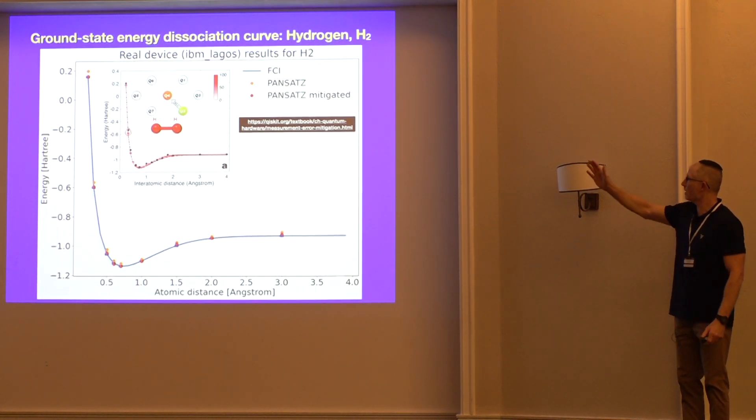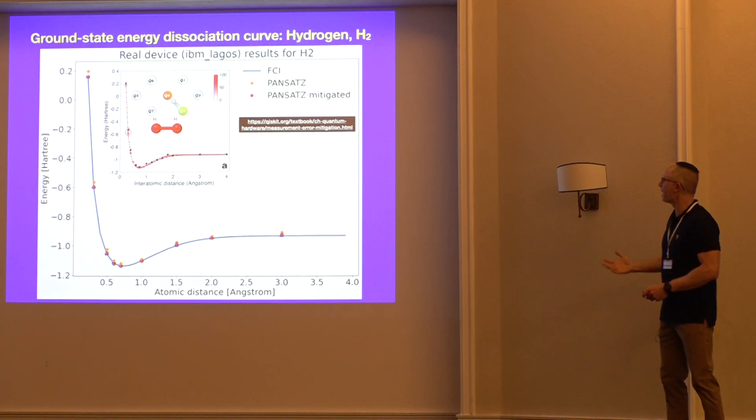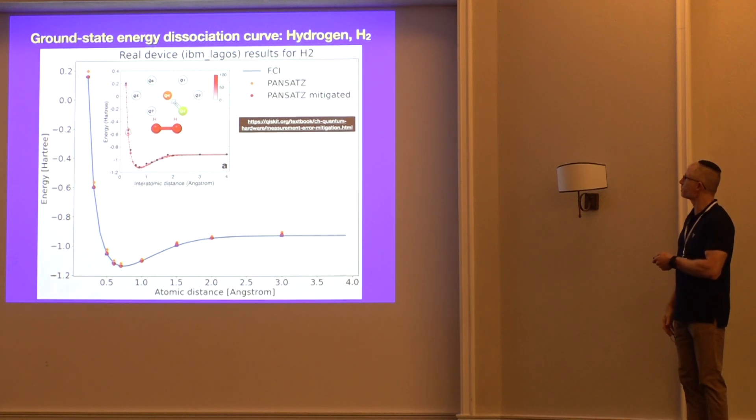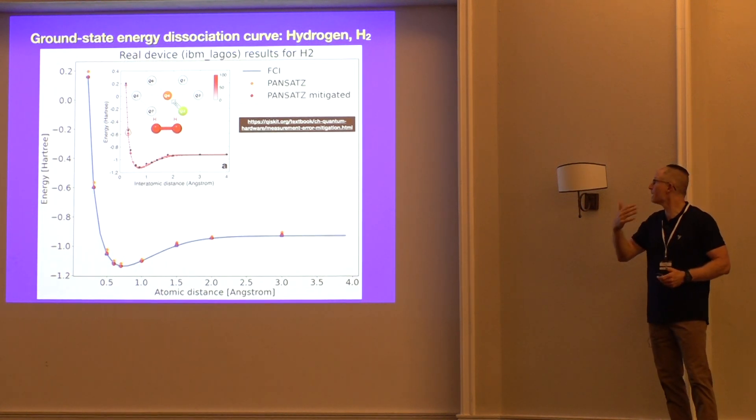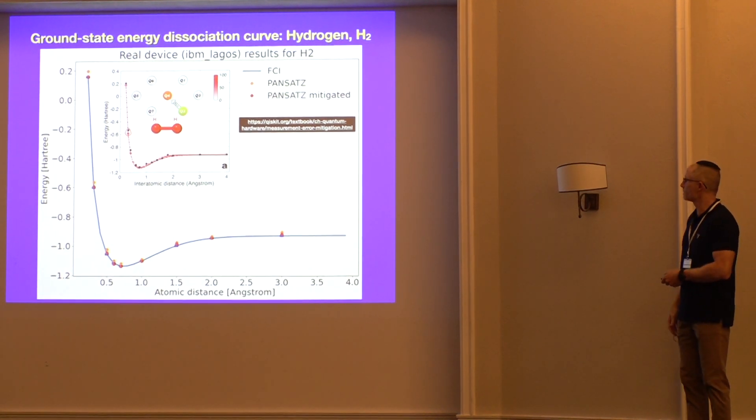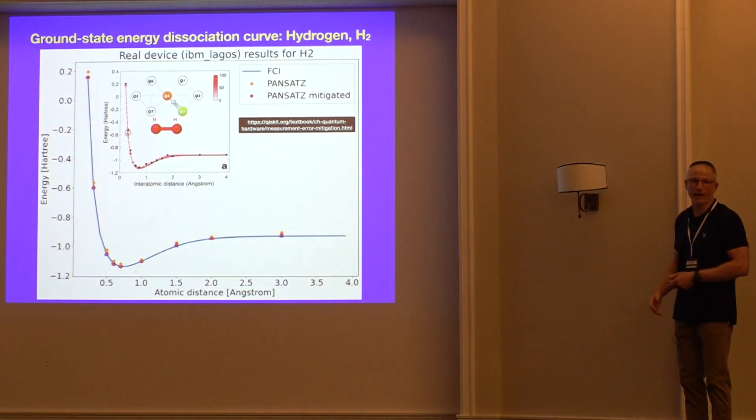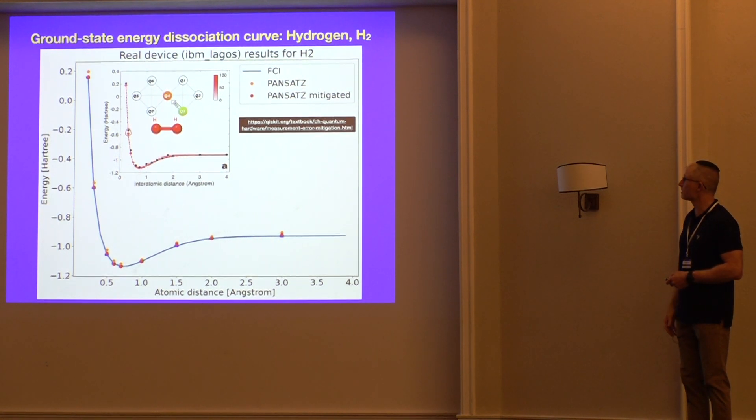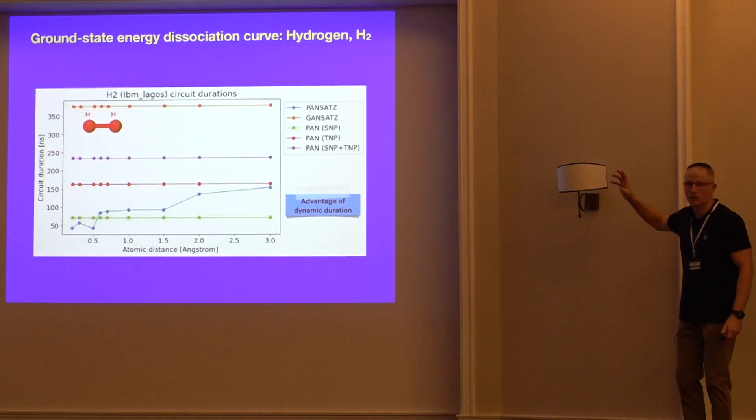This is the same hydrogen molecule, same type of plot. But now we have the real hardware results with the pansatz in the orange. You can see it's also very good agreement with the FCI. But then what Dekel did recently was use, implement readout error mitigation, which is standard available in Qiskit to improve the readout accuracy of your results. And you can see the results go from the orange down to the red, basically giving us chemical accuracy for almost all of the interatomic distances. So this is on real hardware.